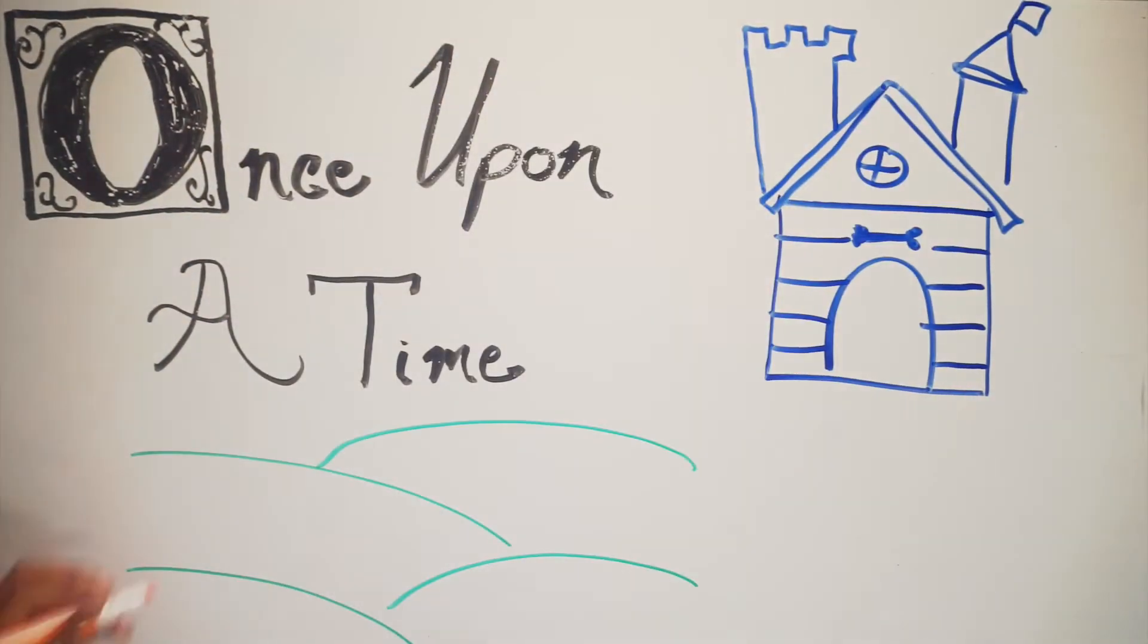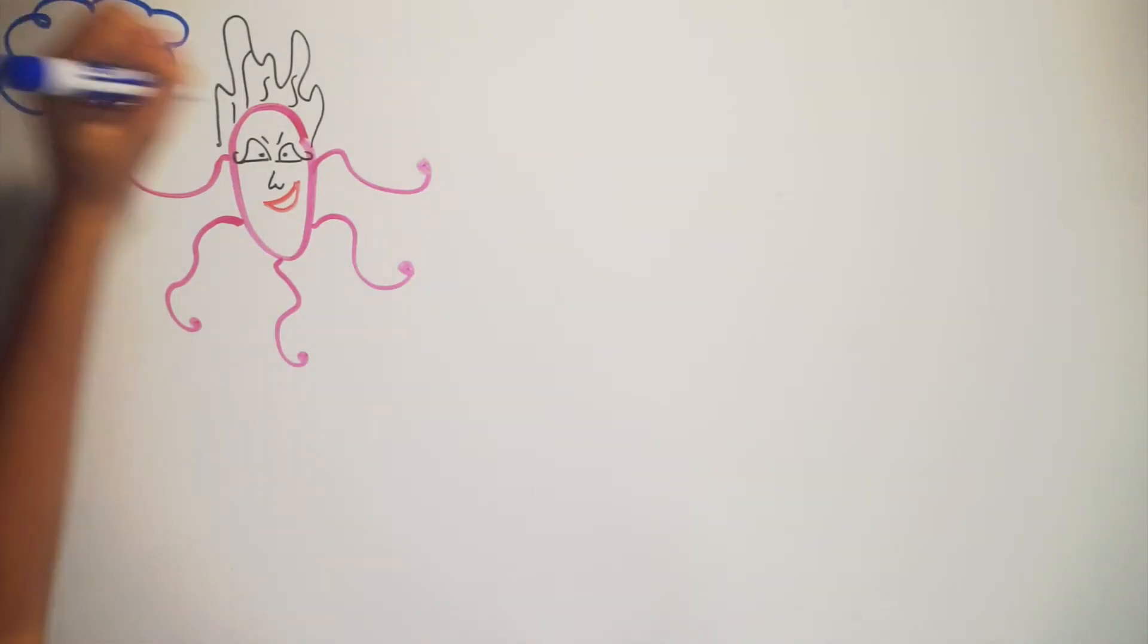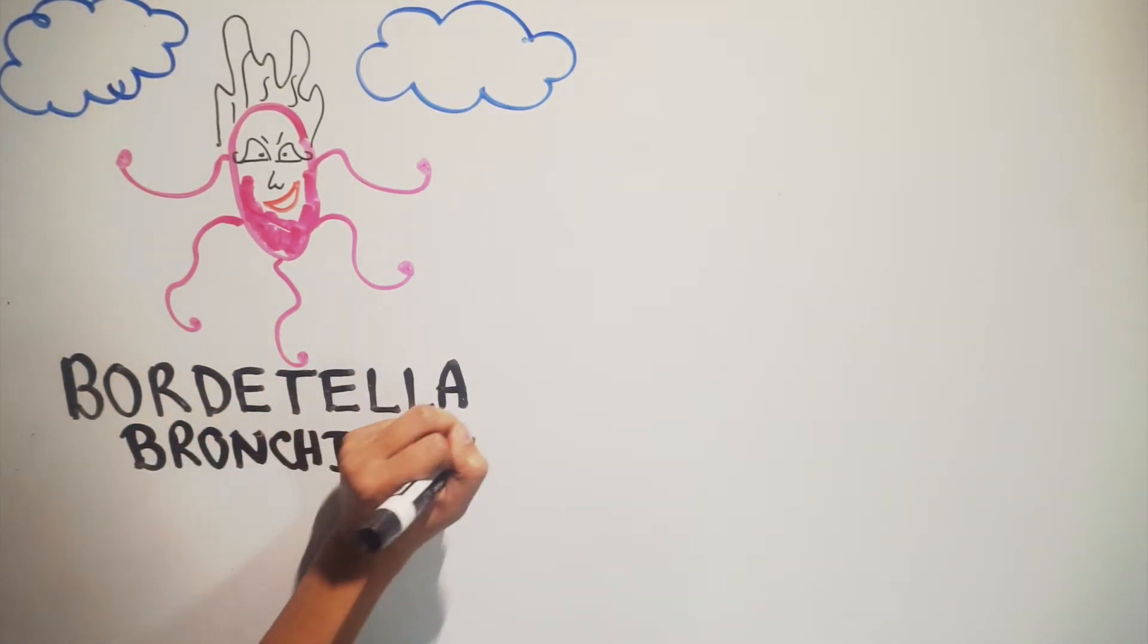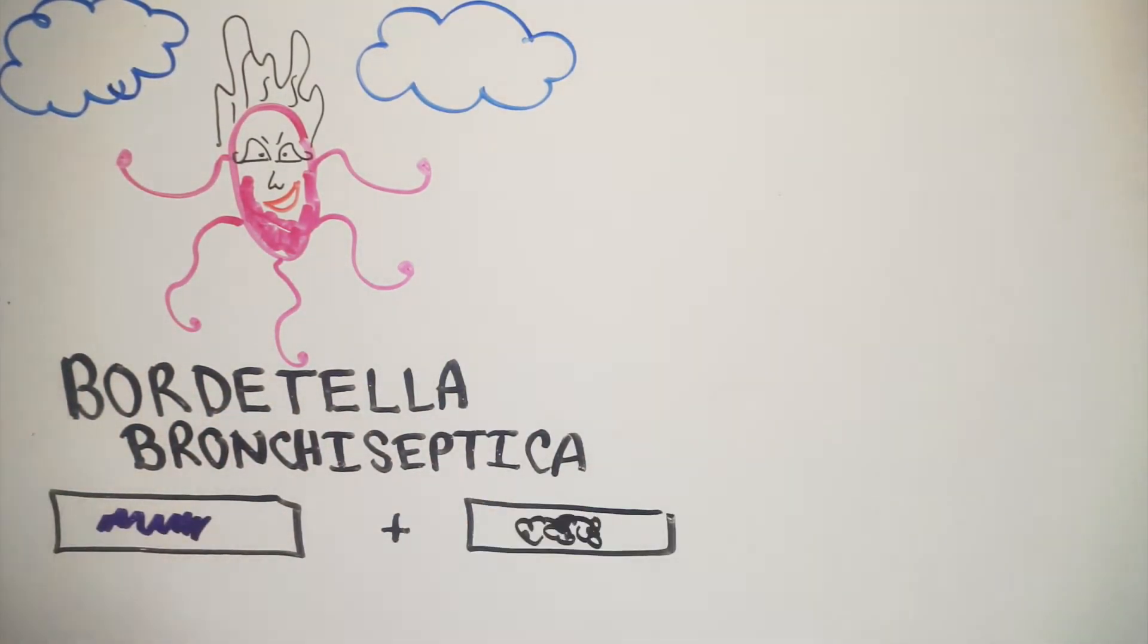Once upon a time, in a kennel far, far away, there lived an aerobic, gram-negative, cocco bacilla named Bordetella bronchoseptica, who is oxidase and catalase positive.